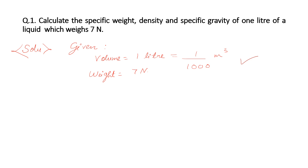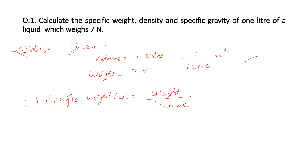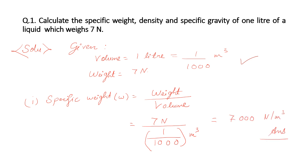The first part asks us to calculate the specific weight, which is defined as the ratio of weight to volume. We have the value of weight and volume, so we put in the values. After solving this equation, we get seven thousand newton per meter cube as our answer for the first part.